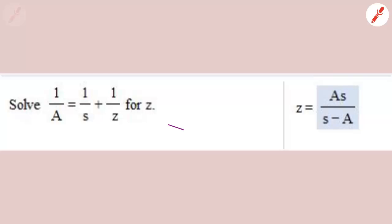So here we go. I have the basic equation 1 over A equals 1 over S plus 1 over Z.